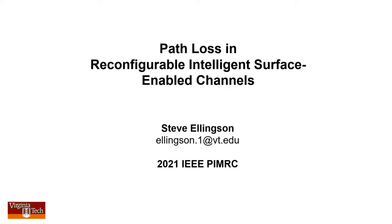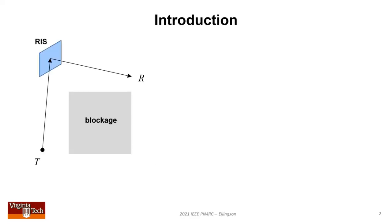Hi, Steve Ellingson here from Virginia Tech. My talk is on path loss and propagation channels enabled by reconfigurable intelligent surfaces. Here's a cartoon showing a RIS-enabled channel where the path to the receiver is obstructed, requiring power to be directed around the obstacle using an RIS.